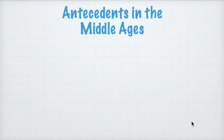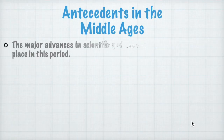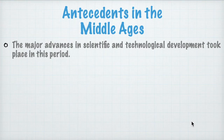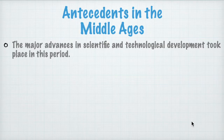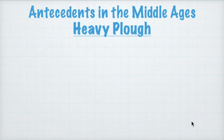This span of roughly 10 centuries is where major advances in scientific and technological development took place. We're going to tackle very briefly about five of them, but don't limit yourselves to what is discussed here — there's more than what is being covered, so we're just going to choose five or six.